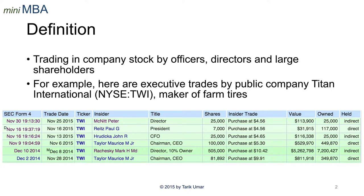For example, Maury Taylor, who's the chairman and CEO, purchased 100,000 shares at $5.30 for $530,000 worth of purchase value, and now owns 450,000 shares. He holds these directly, which means he holds them in his brokerage account. Many insiders also trade indirectly because they trade in their 401k account or in their trust.